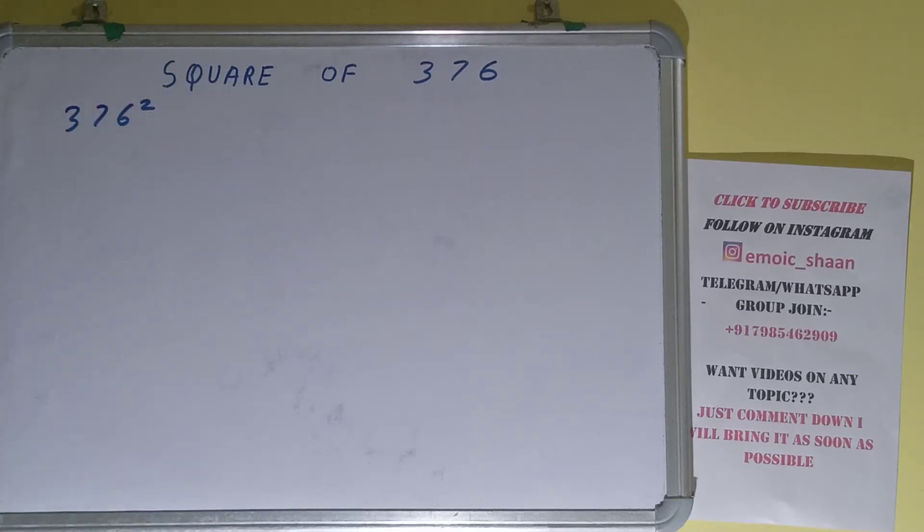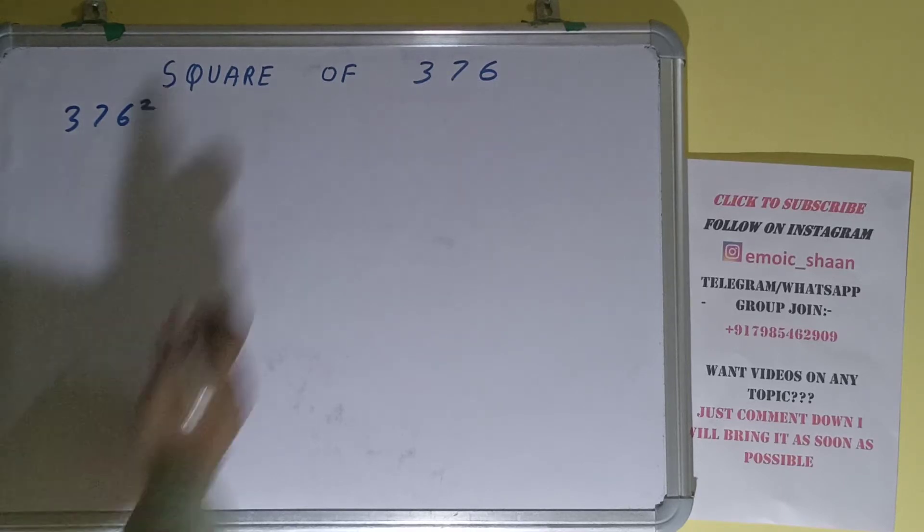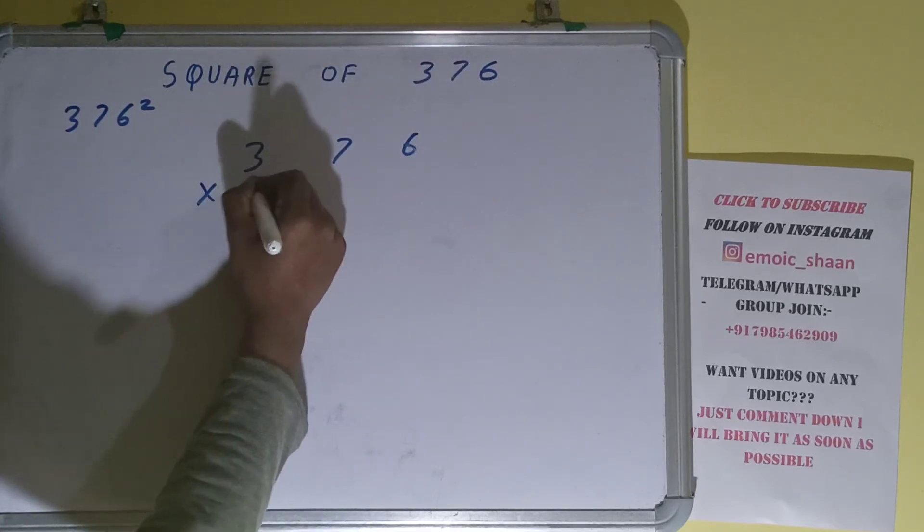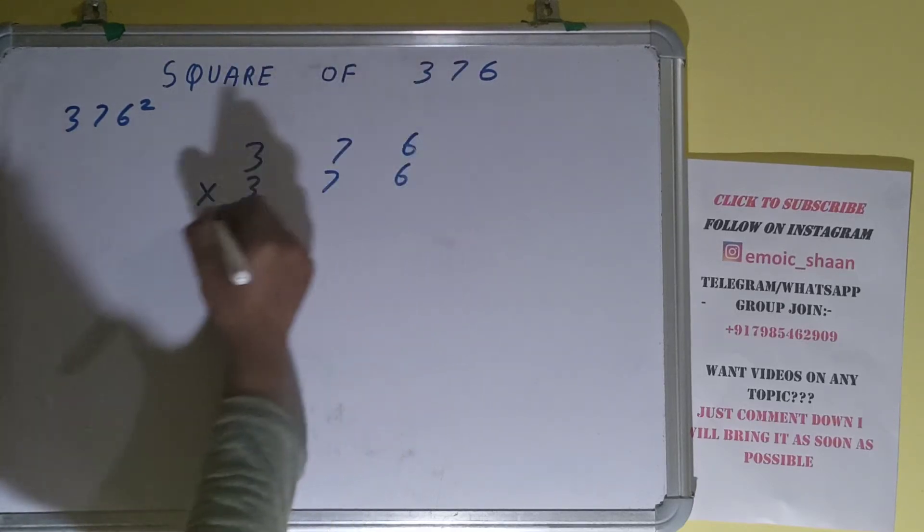Now coming on to the solution. Square basically means multiplying the number by itself, and the number here is 376. To find the square of it, we need to multiply by itself, that is 376, and do the multiplication.